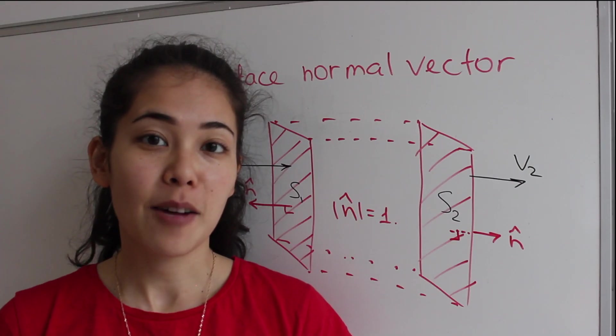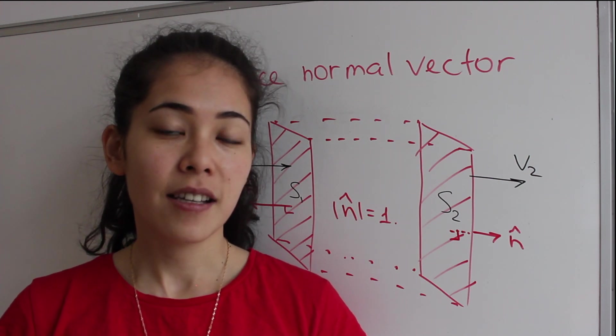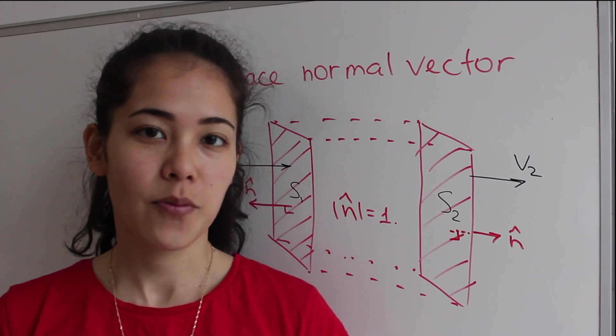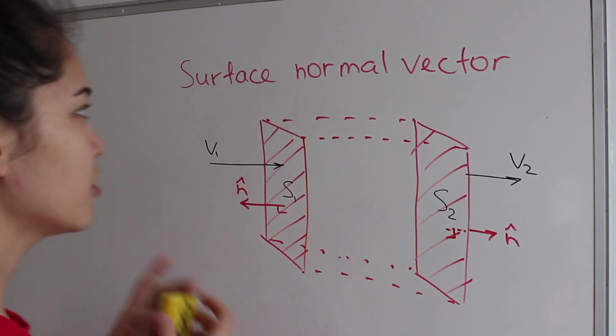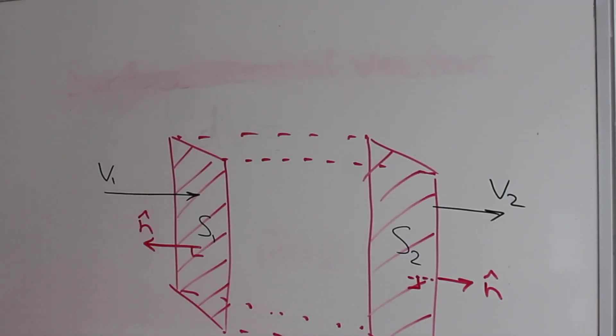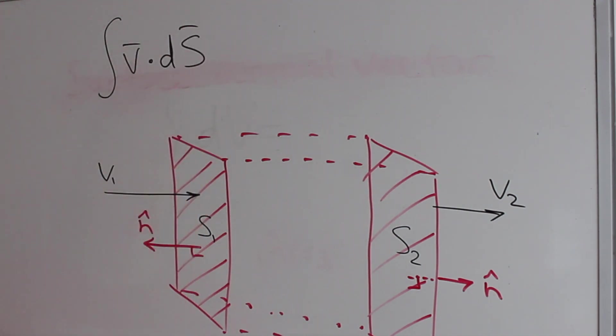So now let's talk about what happens when we open up the integral which contains v vector dot product with ds vector. Let me erase this in order to write the integral. So remember we had an integral of v vector dot ds vector. The integral is over the whole control surface s.